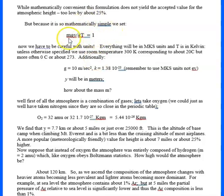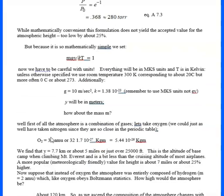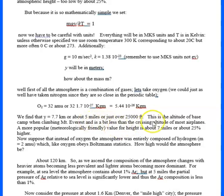We set Mgy over kT equal to 1 to get e to the minus 1, then solve for y knowing kT in joules, M, and g. M is the mass in atomic mass units — in this case we're using oxygen, though we could have used nitrogen and gotten more or less the same value. Oxygen and nitrogen are very similar physically, though very different chemically. This gives about 5 miles, and the more meteorologically accepted value is about 7 miles.